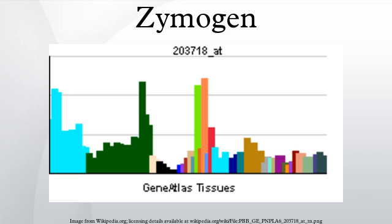A zymogen is an inactive enzyme precursor. A zymogen requires a biochemical change for it to become an active enzyme.